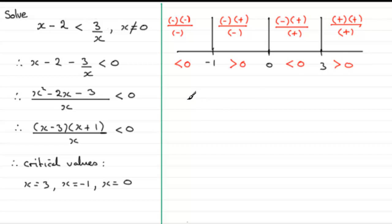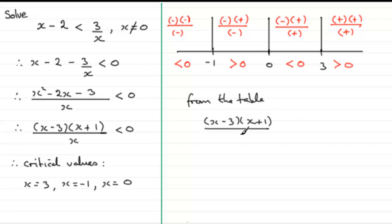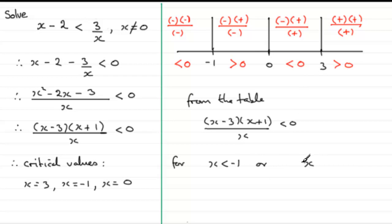From the table, we're looking for where (x minus 3)(x plus 1) over x is less than zero. We can see that applies for x less than minus 1, and also for x in the interval between 0 and 3. It's not in the interval between minus 1 and 0, and it's not for x greater than 3, as those give values greater than zero.